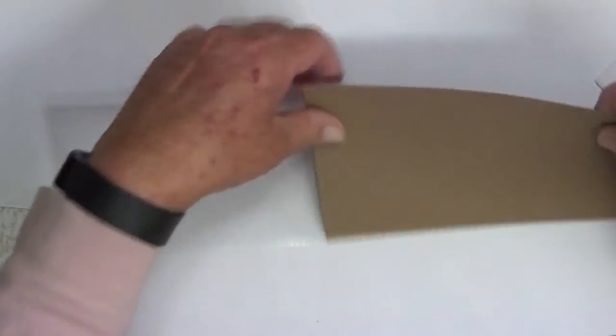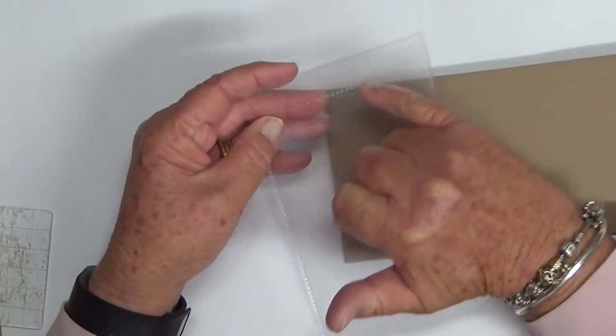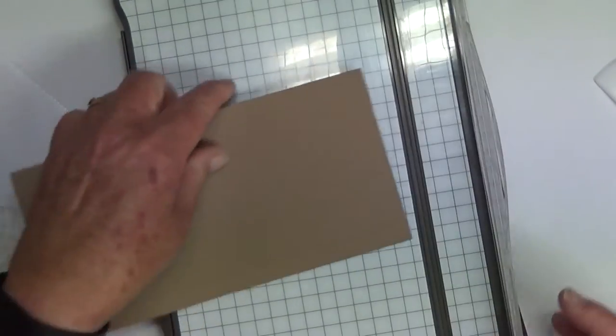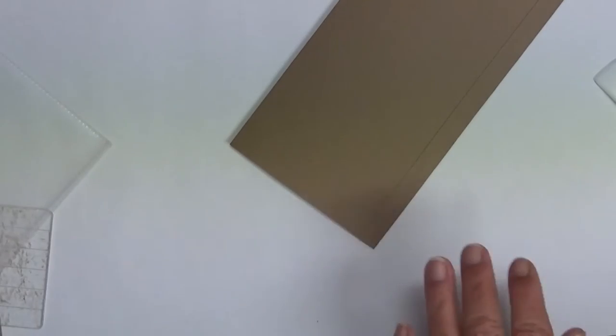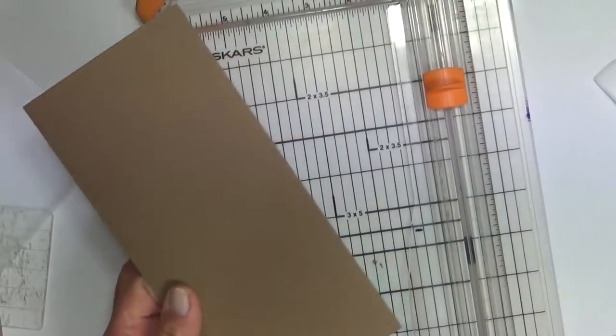That perforated edge there. So that's what that's going to be. Now from there to that perforated edge is about seven eighths of an inch, so I'm going to cut these at one inch. I might grab my other trimmer. That's fairly thick; I don't want to ruin the blade on my Stampin' Up trimmer.